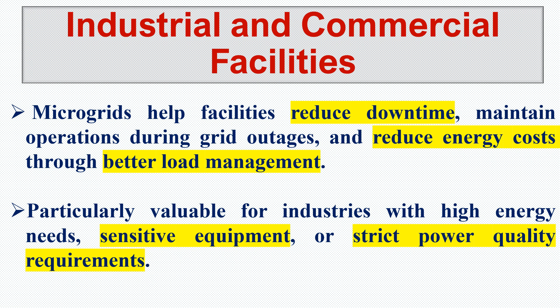The next application is industrial and commercial facilities. Microgrids help facilities reduce downtime and maintain operations during grid outages, and reduce energy costs through better load management. When we have our own microgrid, we always have higher reliability — if the grid goes out, we can supply our own load using battery-stored energy or our own local power generation, giving us different options to supply the load and increasing reliability.